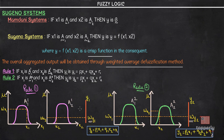Suppose we have two rules. Rule 1 is: if x1 is A11 and x2 is A21, then y1 = p1·x1 + q1·x2 + r1. And Rule 2 is: if x1 is A12 and x2 is A22, then y2 = p2·x1 + q2·x2 + r2. We have also been given the graphs of the fuzzy sets A11, A21, A12, and A22.